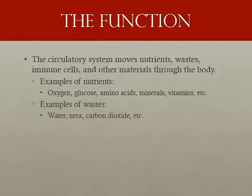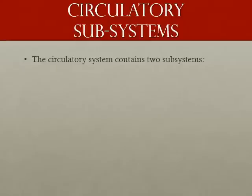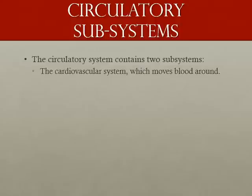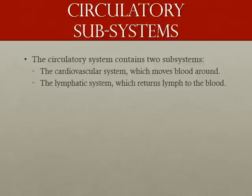Waste products are materials like water, urea, carbon dioxide, and lactic acid. The next section to look at is directly under the function. The circulatory system, based on how blood and blood components move through the body, is broken into two subsystems: the cardiovascular system, which moves the blood around the body, and the lymphatic system, which returns lymph to the cardiovascular system. Lymph is a liquid that is part of the blood's plasma and carries nutrients outside the blood vessels.